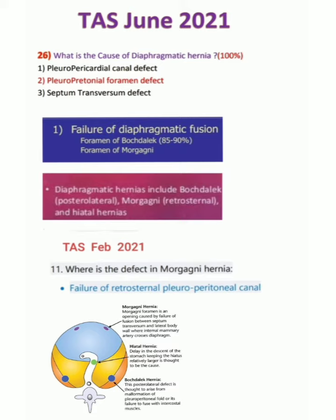The defect in the posterolateral part is due to Bochdalek diaphragmatic hernia. For question 11, they are asking about the defect of Morgagni hernia. The answer is failure of the retrosternal pleuroperitoneal canal. So the retrosternal part corresponds to Morgagni hernia, while Bochdalek involves the posterolateral aspect of the pleuroperitoneal canal.